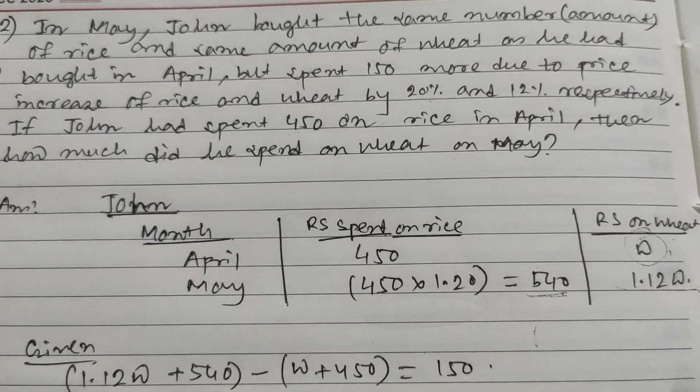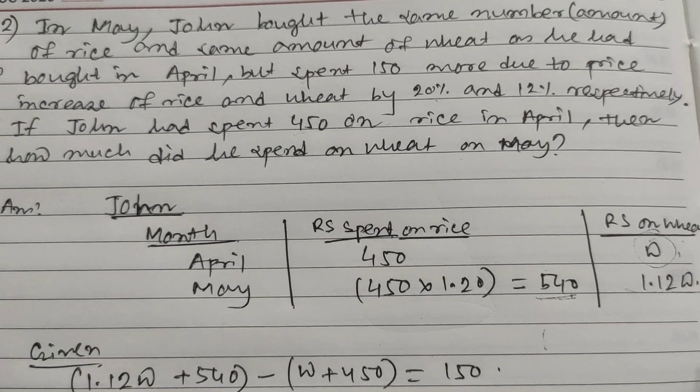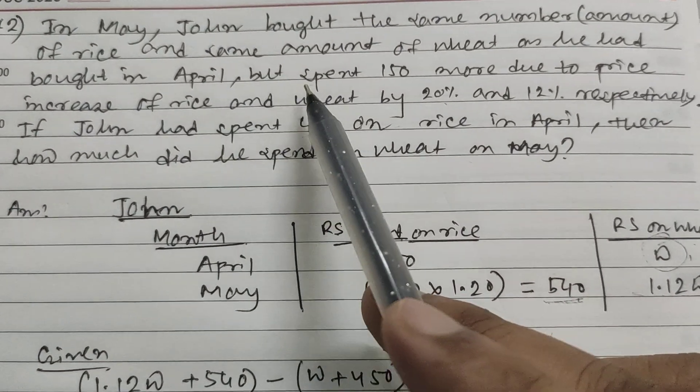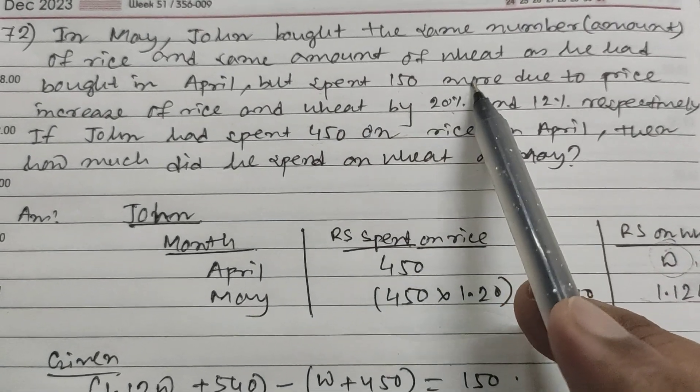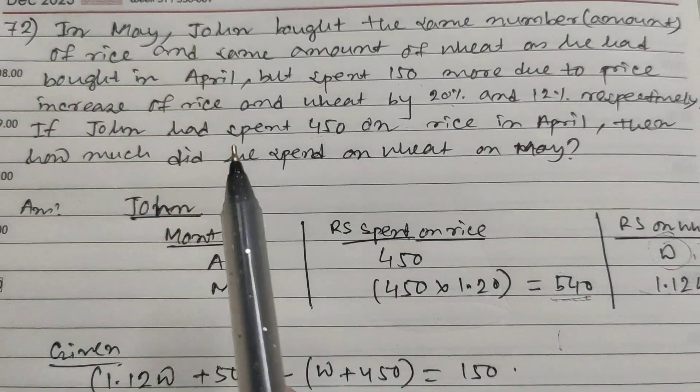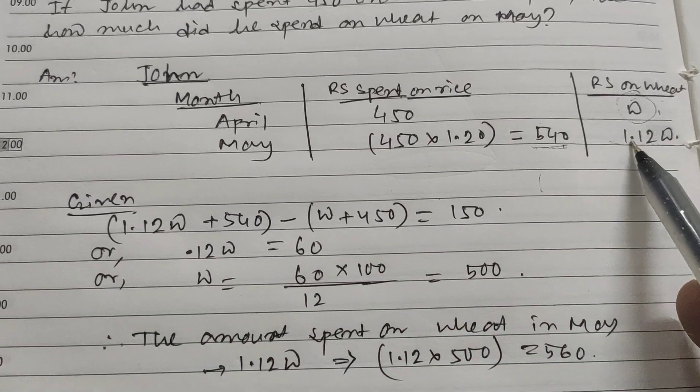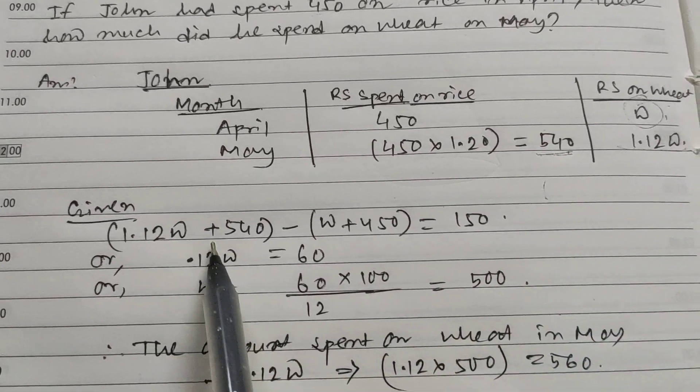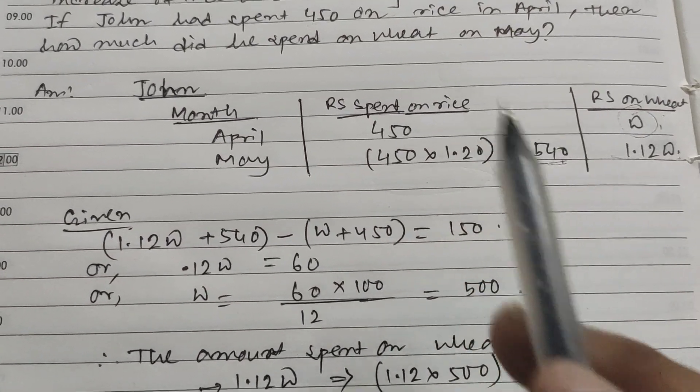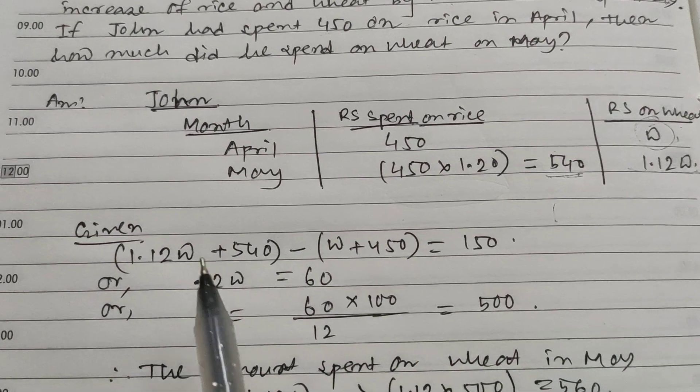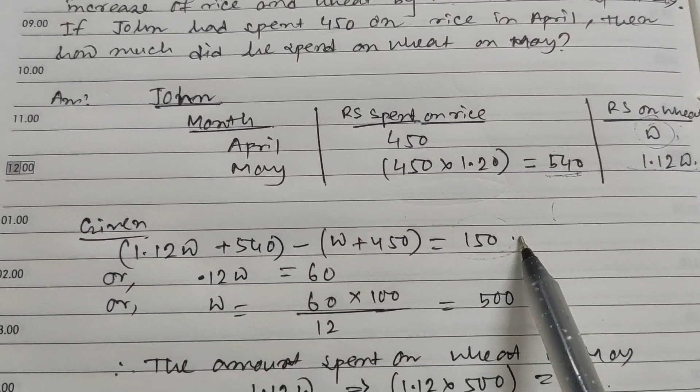It's given that he spent 150 more in May due to the price increase. In May, he spent 1.12w plus 540 total. In April, he spent w plus 450. This difference is 150.